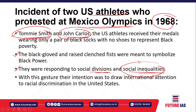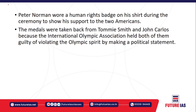These incidents by Tommy Smith and John Carlos were basically a response to the social divisions and racial inequalities in US society. They wanted to end the racism-based criteria and the laws that held black people inferior to whites, and to draw international attention to racial discrimination practices in the United States. A person called Peter Norman wore a badge on his shirt showing support for these two American athletes.